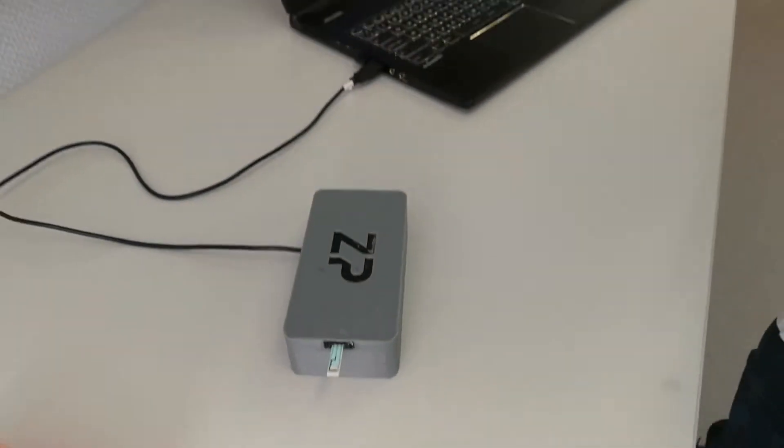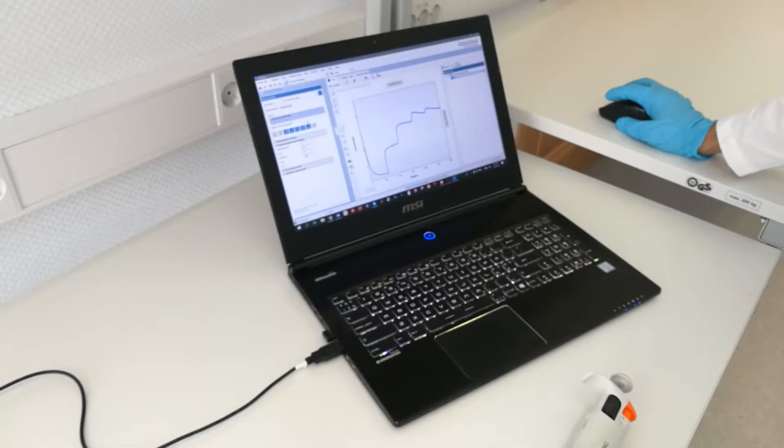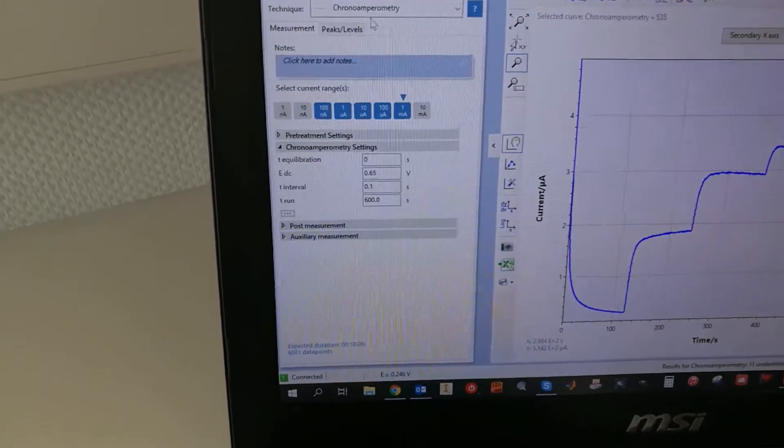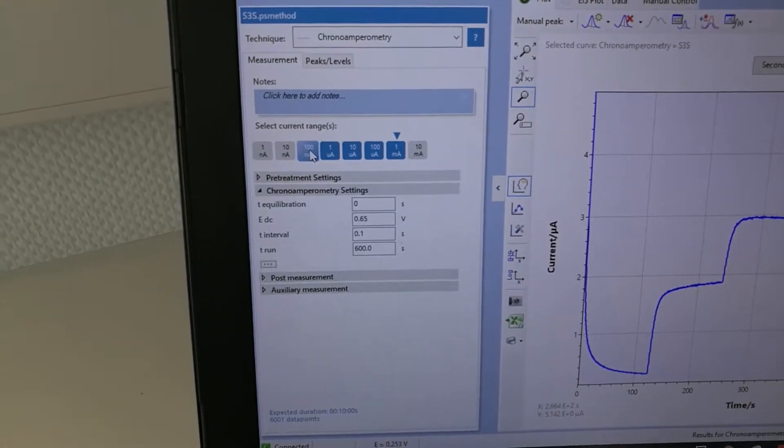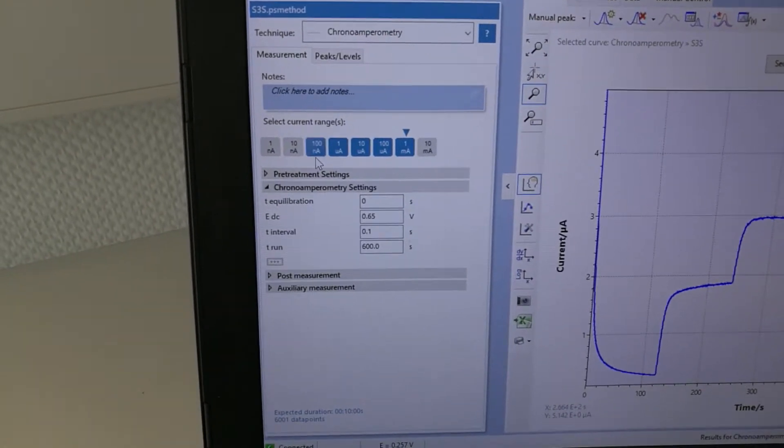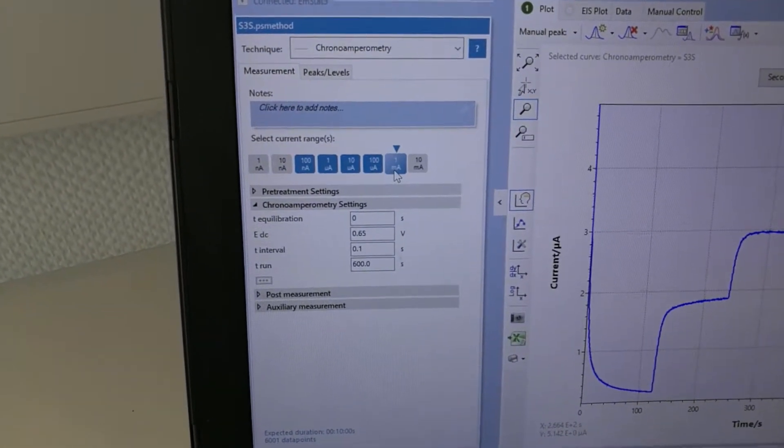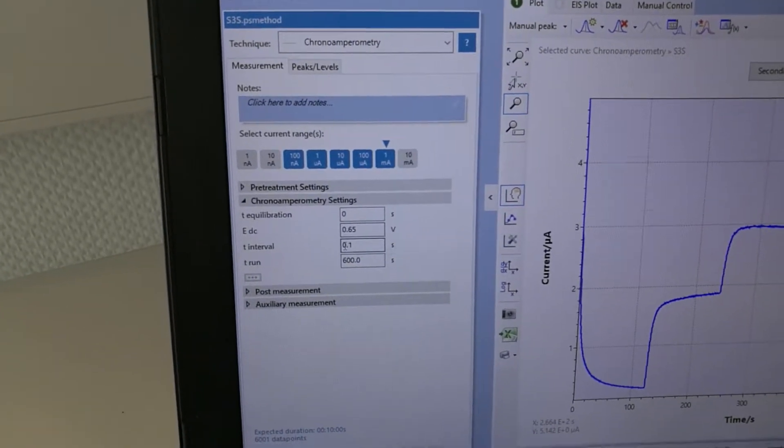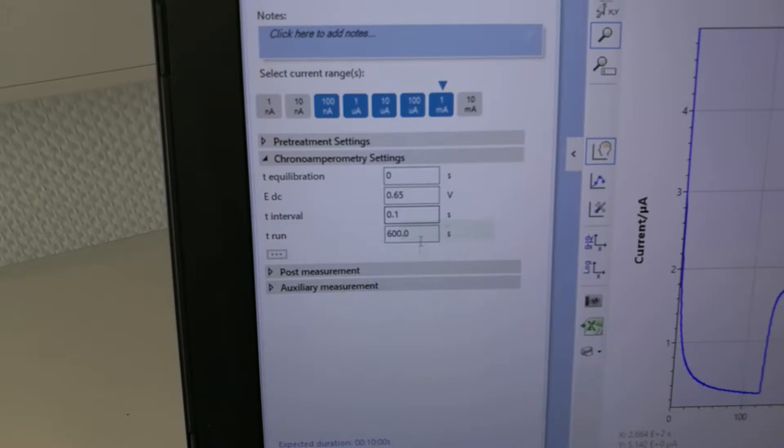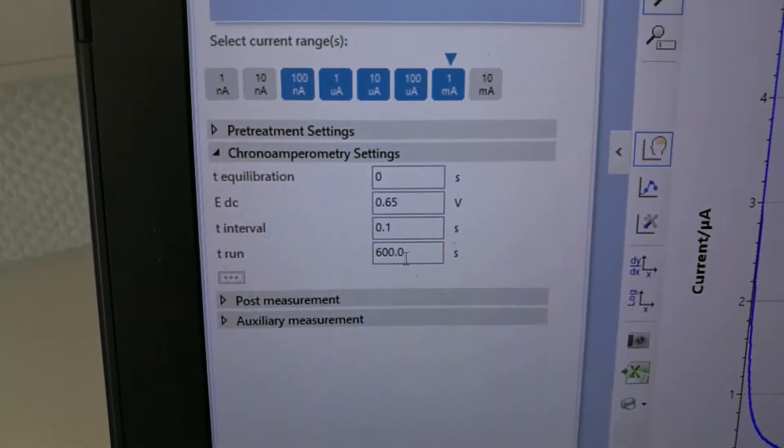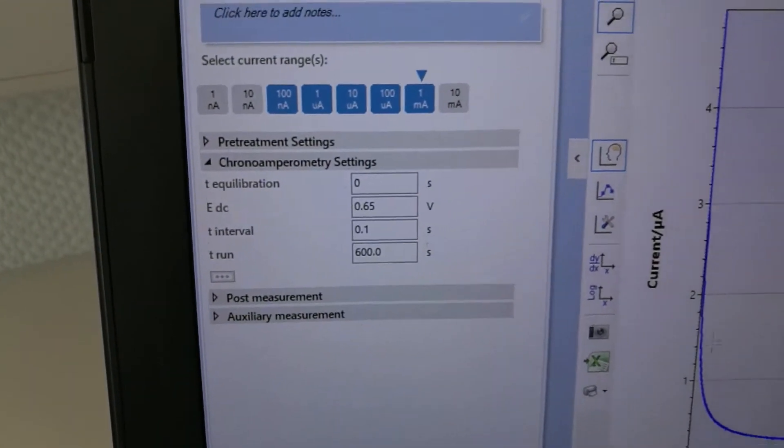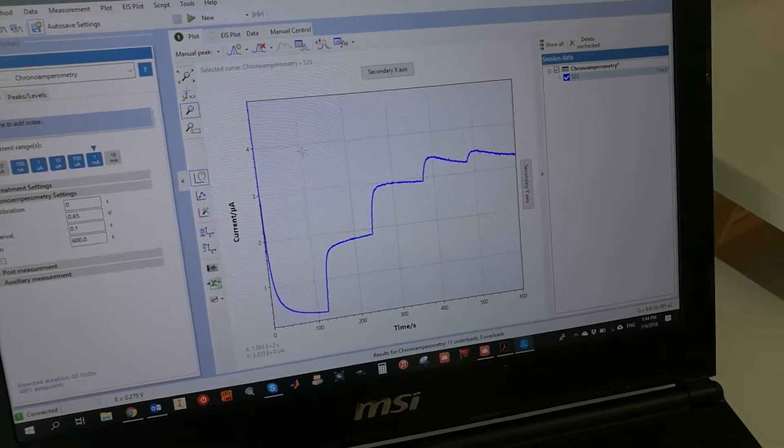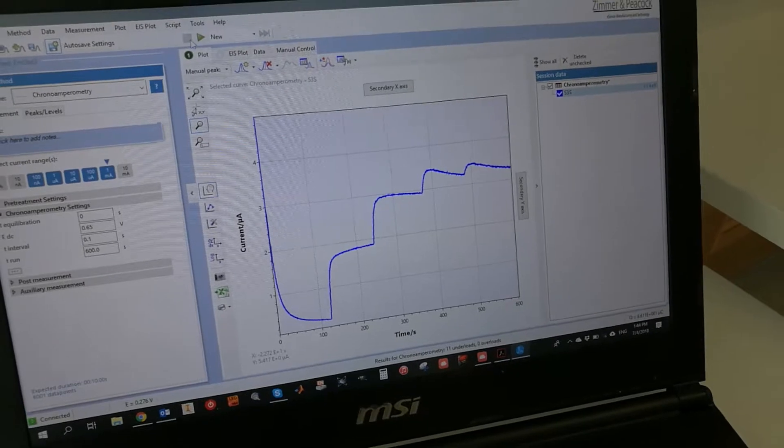Once this is done, we're going back to our software. The device is connected. We are using a technique which is chrono-amperometry. We are using a current range from 100 nanoamps to 1 milliamp with a potential applied of 650 millivolts, an interval of 0.1 seconds, and we are going to run it for 600 seconds. This curve you see to the right of those settings is a typical 5 millimolar step response to glucose of one of our sensors.